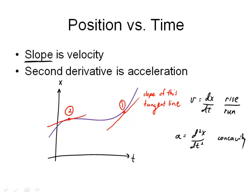Is the graph concave up or concave down? So in this location, it's concave down. So the acceleration here must be negative. But over in this location, it's concave up. So the acceleration here is positive.